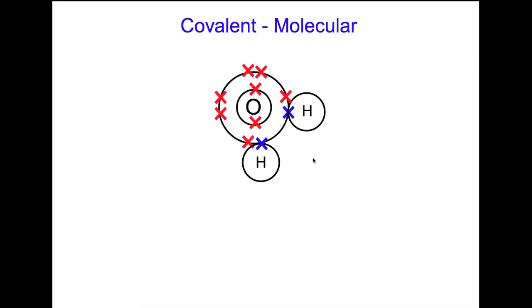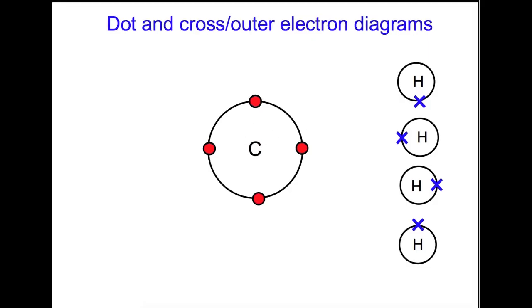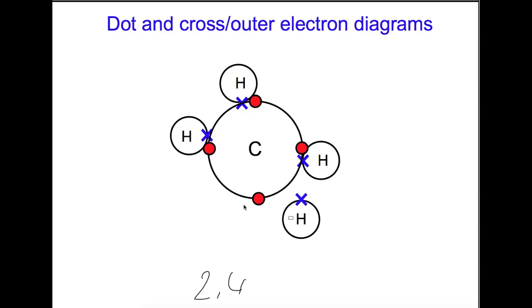Let's try and draw some more dot and cross diagrams. To draw a dot and cross diagram you only need to show the outer electrons of the elements. For methane, CH4, we have carbon, and if you look on page 6 of the data book you'll see that the electron arrangement for carbon is 2,4. That means we only need to show the four outer electrons. Electrons go into the shell as single unpaired electrons — one, two, three, four — before they start to pair up, so we have four single electrons for the carbon. Hydrogen has an electron arrangement of 1, and we can bring each of these four hydrogens to pair up with each of these single electrons from the carbon. And this is our dot and cross, or outer electron, diagram for methane.